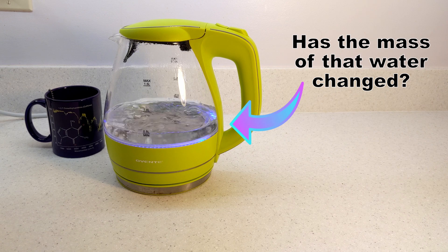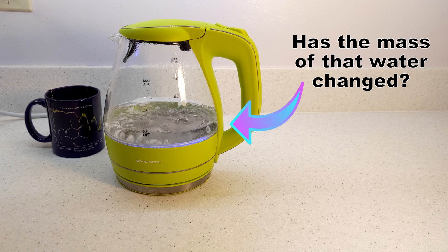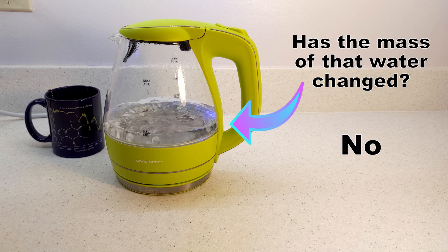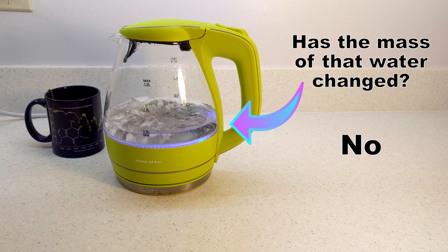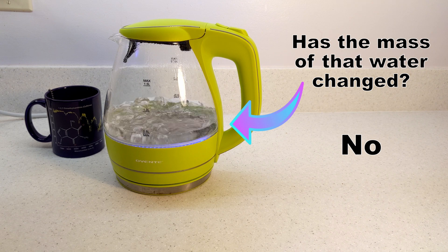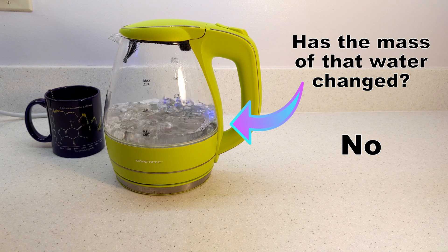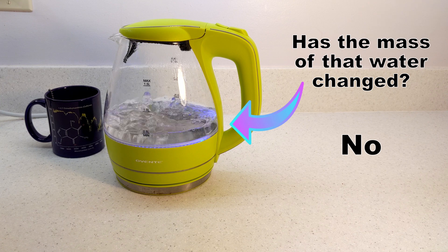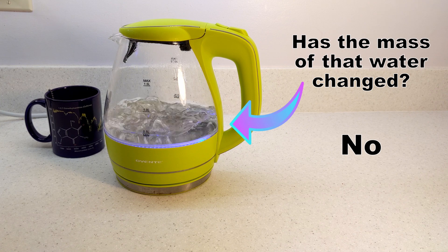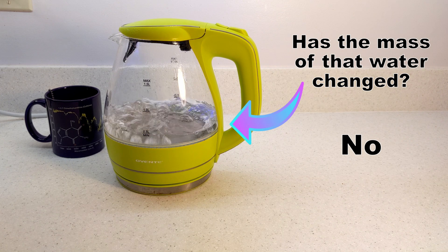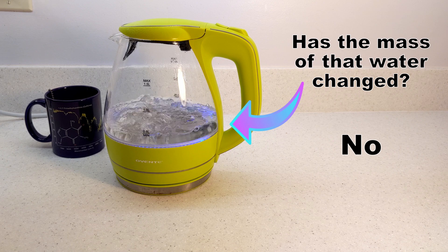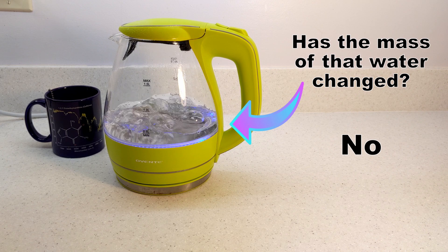A lot of people find the answer to this question to be confusing. No, the mass of the water has not changed, but the density of a gas is so much lower than that of a liquid that a lot of people assume that the mass has to somehow be lower when the liquid changes into a gas. It's not. The water vapor is dispersed through the air, but it's all still there.